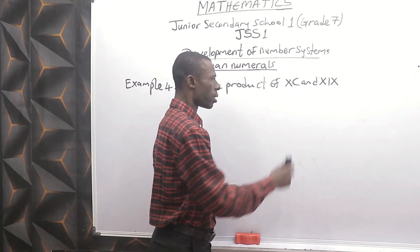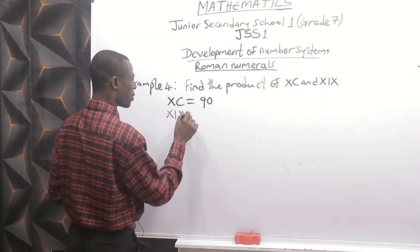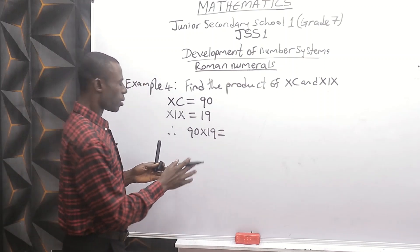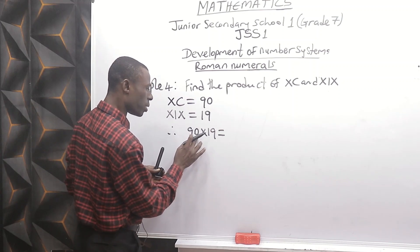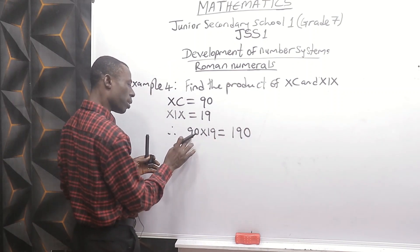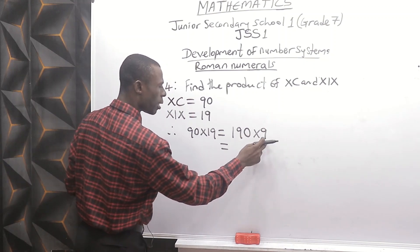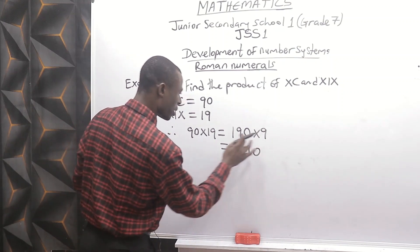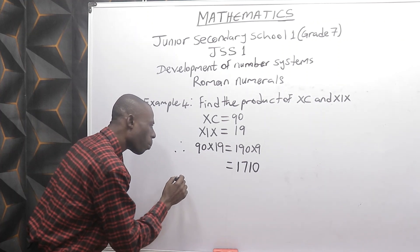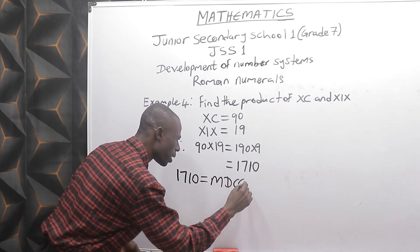Find the product of XC and XIX. XC is 90 and XIX is 19. So we calculate 90 times 19. Take the zero from 90 and multiply 9 times 19: nine times zero is zero, nine times nine is 81 write one carry eight, nine times one is nine plus eight is 17 — giving 171. Then put the zero back to get 1710. Therefore 1710 in Roman numerals is MDCCX.